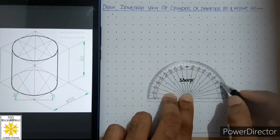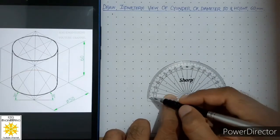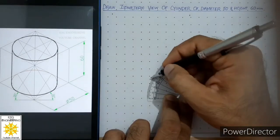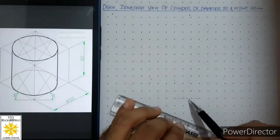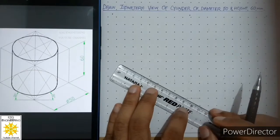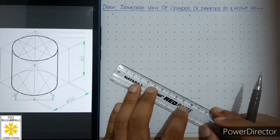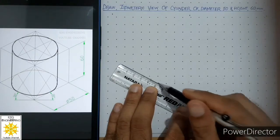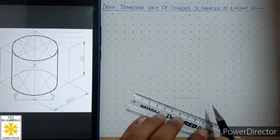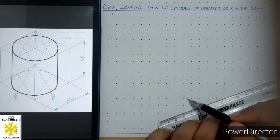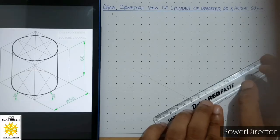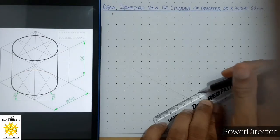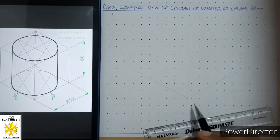Let us mark 30 degrees on this side and 30 degrees on the other side. After that we will align our scale with this point and draw a continuous thin line — that is the first isometric axis. We can take any length at the start. Then align your scale with the second point and draw the second continuous thin line — this is the second isometric axis.